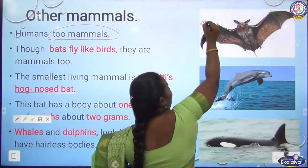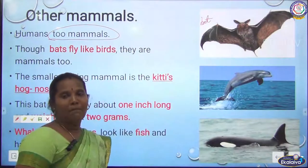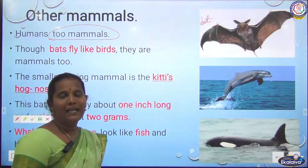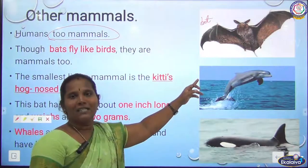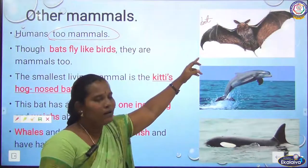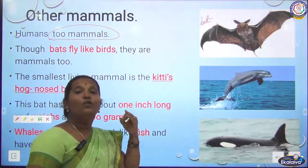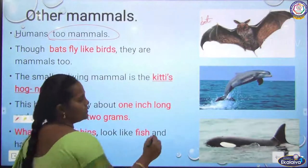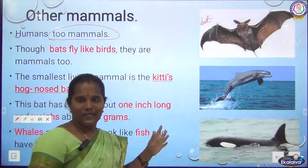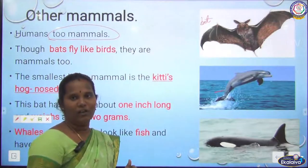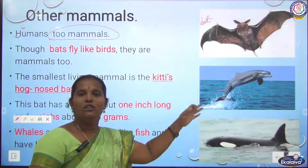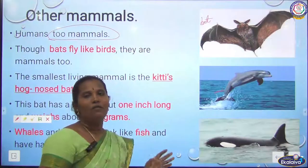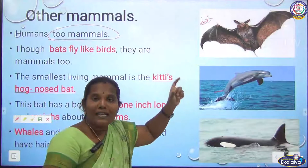The bat is another mammal — it is the smallest mammal in the world. We think the bat is a bird, but it is not. It is considered a mammal because it gives birth to young ones, its skin is covered with hair, and it feeds its young on milk. The dolphin is also a mammal — we think it is a fish, but it is not. Dolphins also give birth and can feed their young.